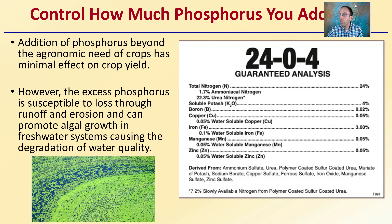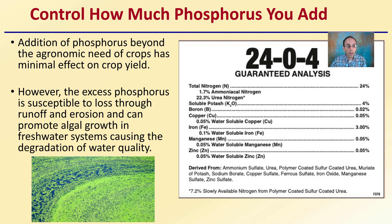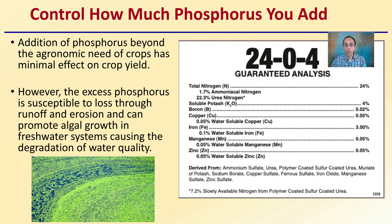So how do we control how much phosphorus you add? Addition of phosphorus beyond the agronomic need of crops has minimal effect on crop yield, so why add more? However, the excess phosphorus is susceptible to loss through runoff and erosion, and it can promote algal growth in freshwater systems, causing degradation of water quality. This is why it's important to know your phosphorus levels. Where you have optimum or above-optimum levels, you can purchase fertilizers that do not contain phosphorus — a 24-0-4 is the example here — because you already have enough phosphorus in your soil. This provides other nutrients your crops may need without contributing to freshwater contamination through algal blooms and runoff of excess phosphorus.